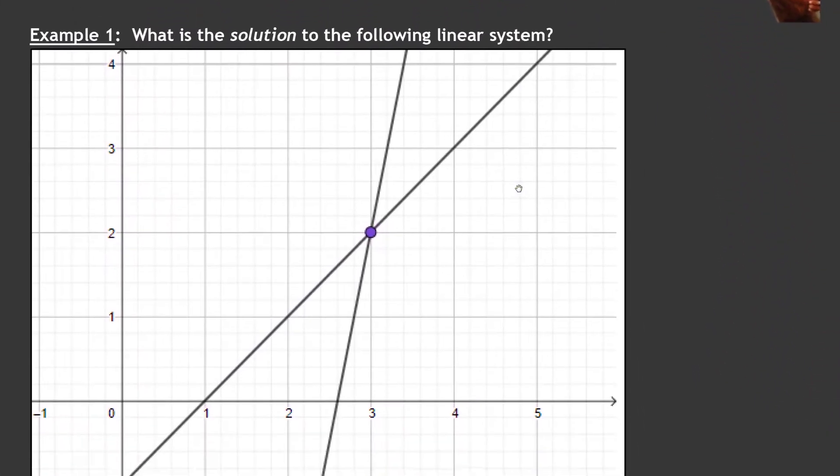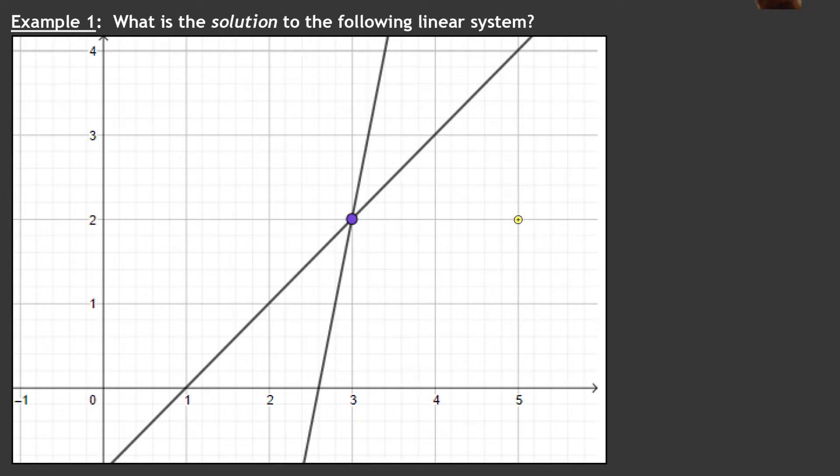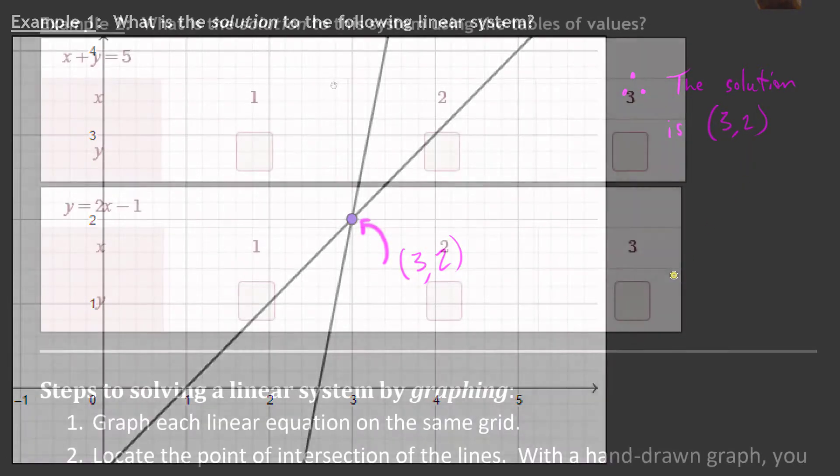So I've got a linear system here, two lines on the same graph. And we want to know what is the solution to this linear system? Well, the solution, again, is where they intersect. So that would be right here. They're intersecting at the point three, two, an X of three and a Y of two. And that is their solution. Some people would like to actually have a therefore statement or some sort of final statement to that. So you could say the solution is and then give the point. And you can even label the point with a letter if you really want to.